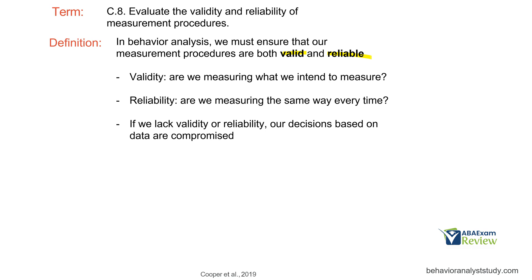What do these things mean? Validity says: are we measuring what we intend to measure? If I have target behavior A, am I measuring target behavior A, and am I measuring it correctly? This is where topography plays a big role. Up till now we've really hammered home function and the importance of function. With data collection, when it comes to being valid and reliable, we have to really lock in that topography through a good definition. A good definition is going to let us measure this behavior over and over. What are some technicians if you're not observing or supervising them enough?